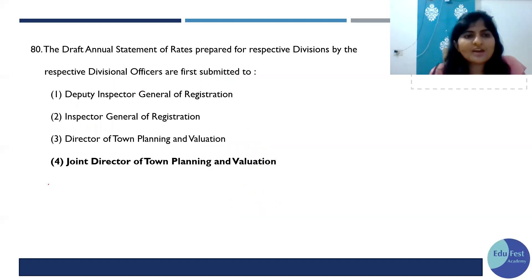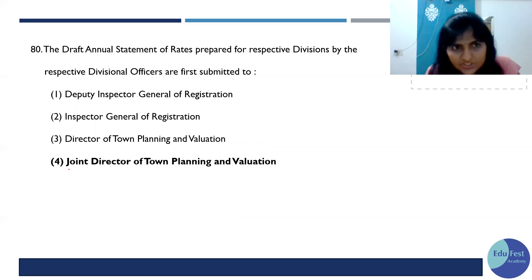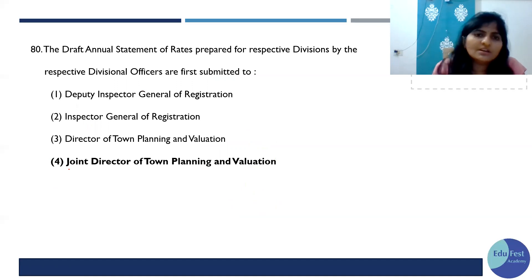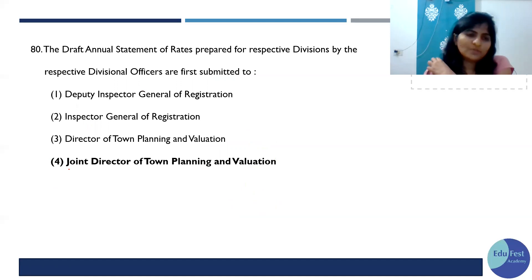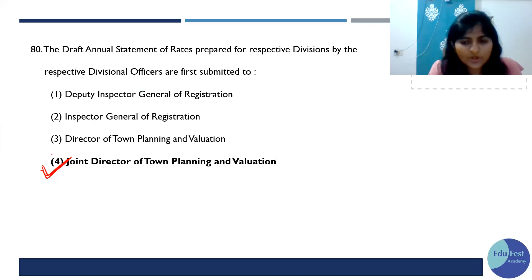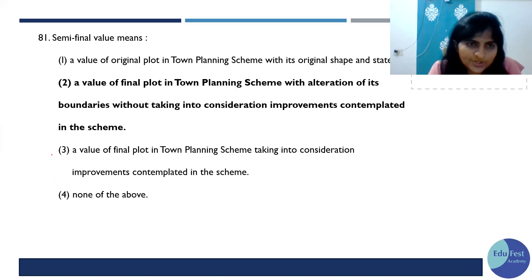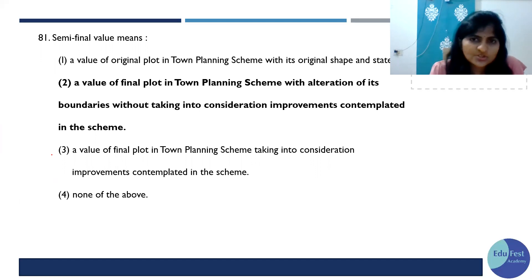Next: the draft Annual Statements (AS) are prepared for the respective division by the divisional officer. First, they have to submit it to the Joint Director of Town Planning, and then it goes to the IGR Maharashtra for submission. So the answer is Joint Director of Town Planning — then the Director, and then IGR Maharashtra.